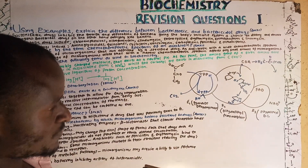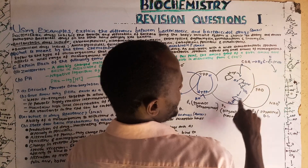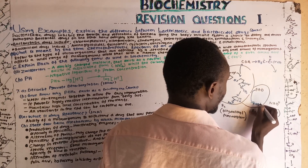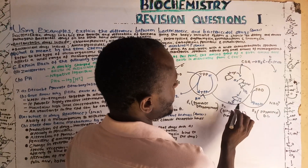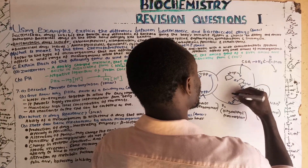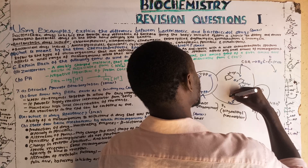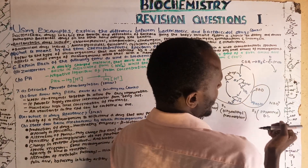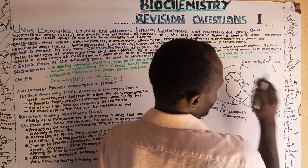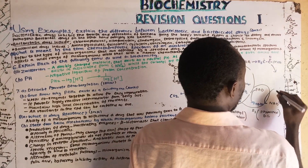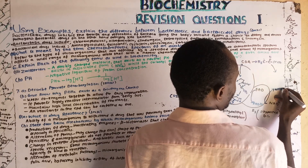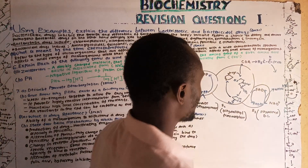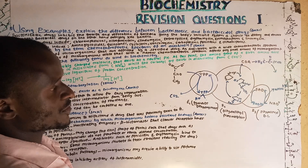The remaining lipoate group is completely reduced. This reduced lipoate then gets oxidized back to its original form. FAD is reduced and donates its electrons to NAD to form NADH, while FAD is regenerated back to its original form.